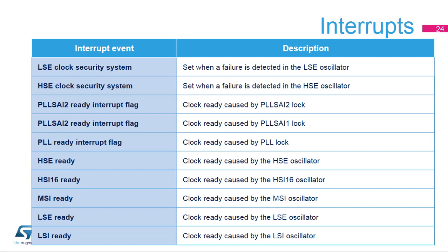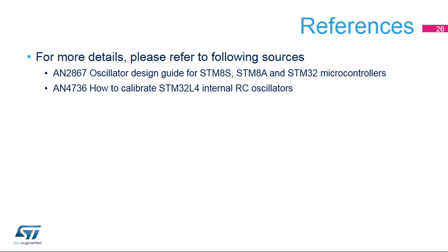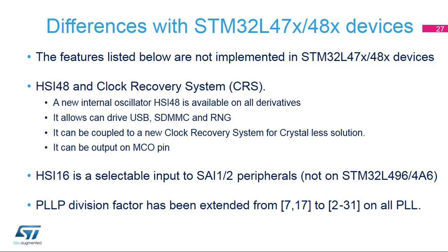This slide lists the RCC interrupts. The LSE and HSE clock security systems, the PLL-ready, and all five oscillator-ready signals can generate an interrupt. In addition to this training, you may find the power control and interrupt controller trainings useful. For more details, please refer to Application Note AN2867, an oscillator design guide for STM8S, STM8A, and STM32 microcontrollers, and Application Note AN4736, which explains how to calibrate STM32L4 internal RC oscillators.